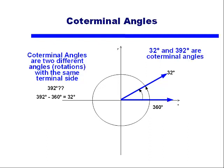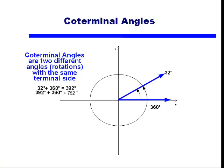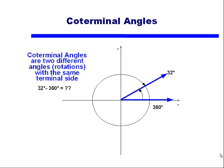Coterminal angles share the same initial side and the same terminal side. So 32 degrees plus a complete rotation of 360 degrees equals 392 degrees — a coterminal angle. We're not limited to just one rotation. We could take 392 degrees and add another rotation to get 752 degrees, which is also coterminal with 392 degrees and 32 degrees. You cannot tell just by looking at the terminal side which of these angles was the original.